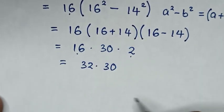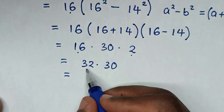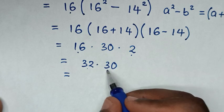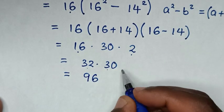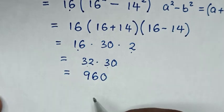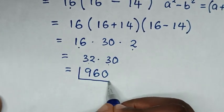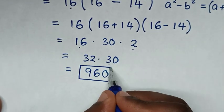Then it will be equal to 32 times 3, it will be 96, then this 0. So 960 is our final answer.